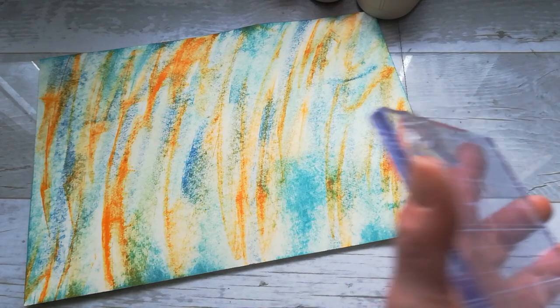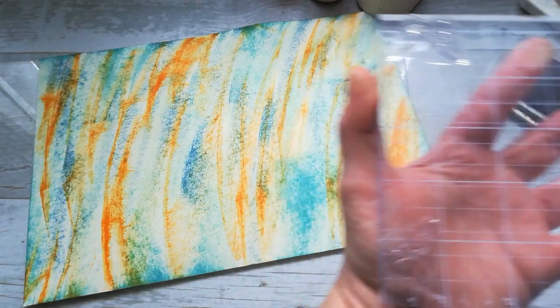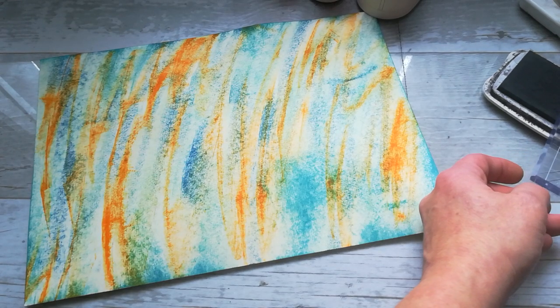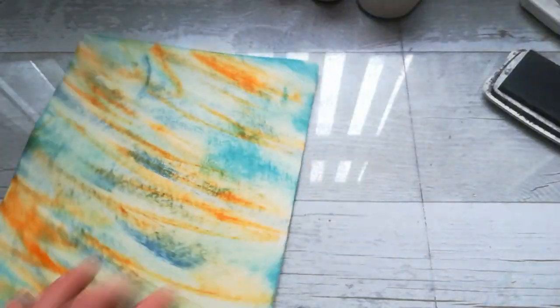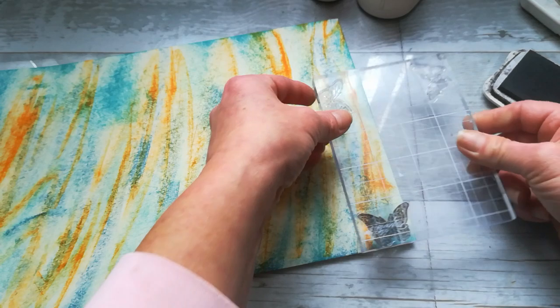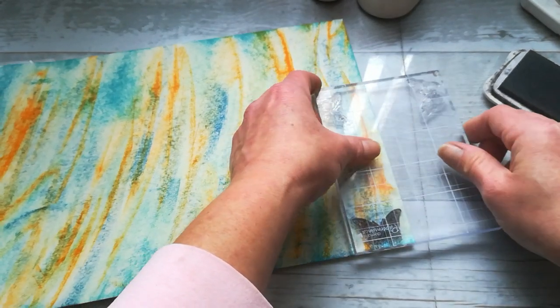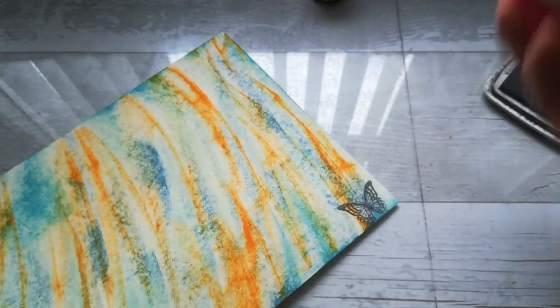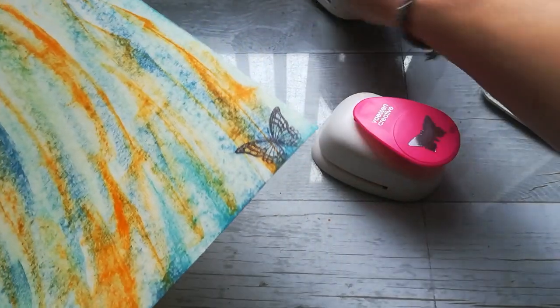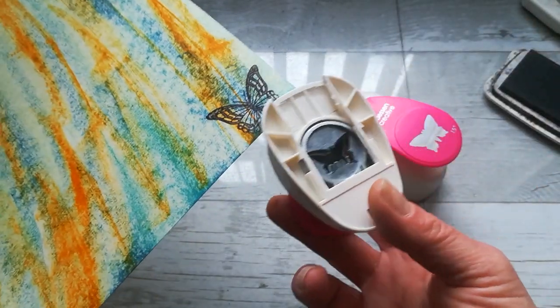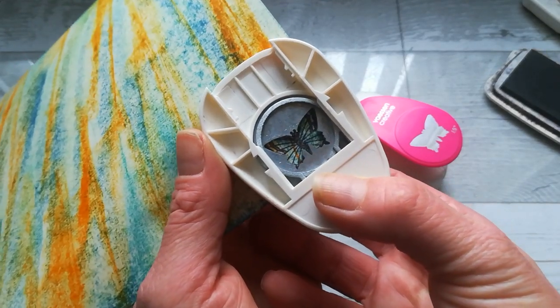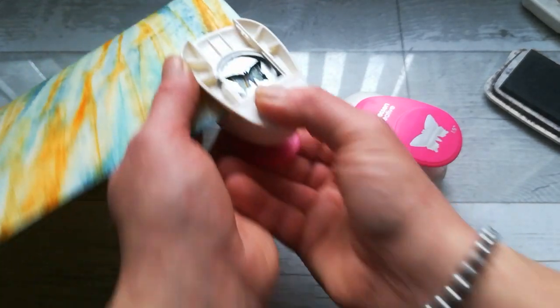I took black ink, chose some butterfly I wanna stamp. I stamped that butterfly on my paper, and then took one of these paper punches, no matter what kind of size. I just slide it there and try to put the stamp in the middle and punch.